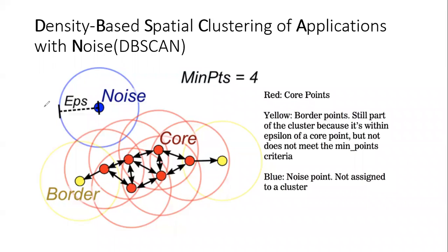Hello all, today we'll be discussing the DB scan algorithm. The full form of DB scan is Density Based Spatial Clustering of Applications with Noise. DB scan is one of the better unsupervised machine learning techniques, which sometimes performs better than k-means clustering. It has its own advantages and disadvantages which we'll be discussing at the end of this video.